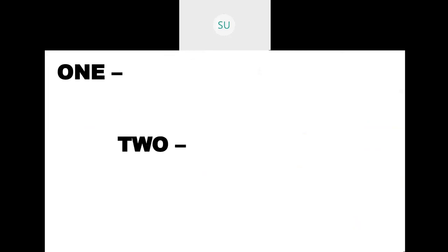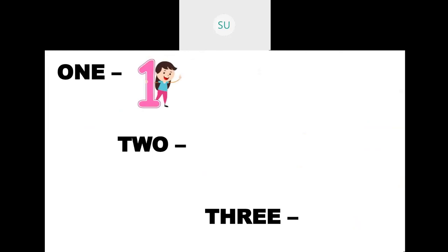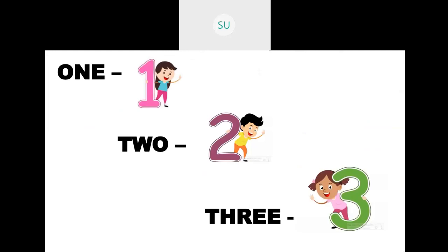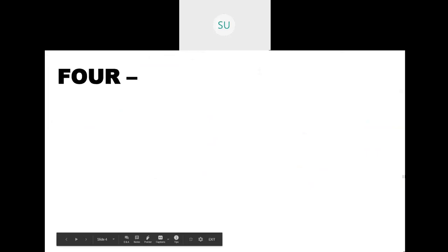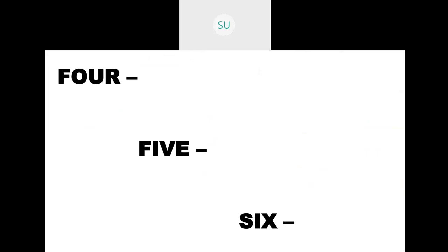Let's see the number names for these numbers. O-N-E is 1, T-W-O is 2, T-H-R-E-E is 3. So 1 is ONE, 2 is written as TWO, and 3 is written as THREE. Then after 3 we have 4, F-O-U-R, then F-I-V-E is 5, and S-I-X is 6.